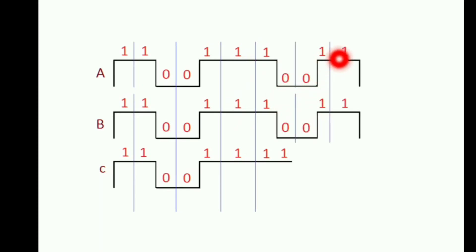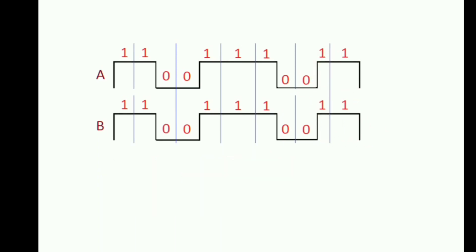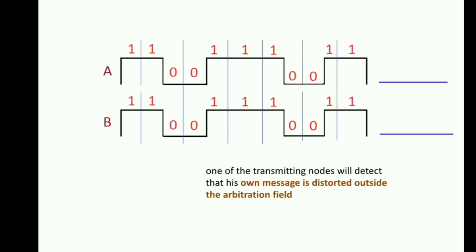So let's have a look on it. See, A and B are keeping on transmitting with respect to this message ID. At the end, once it comes out of the arbitration field, what will happen is both nodes, either A or B or even both as the transmitting nodes, will detect that the phone message is distorted outside the arbitration field.